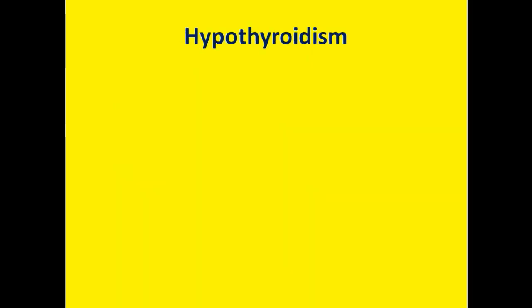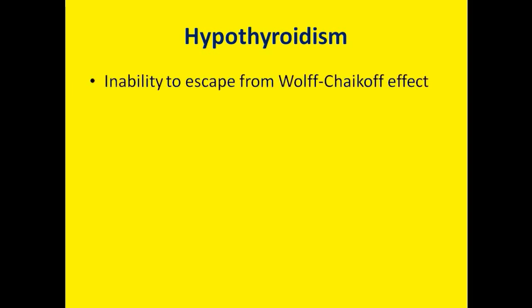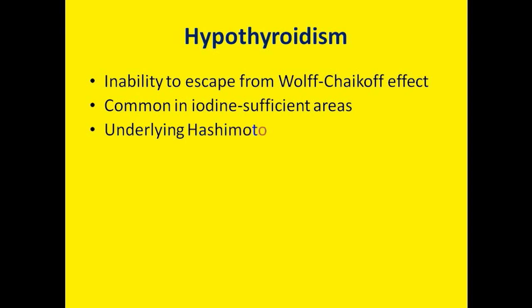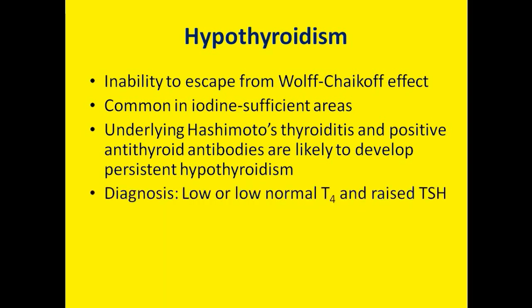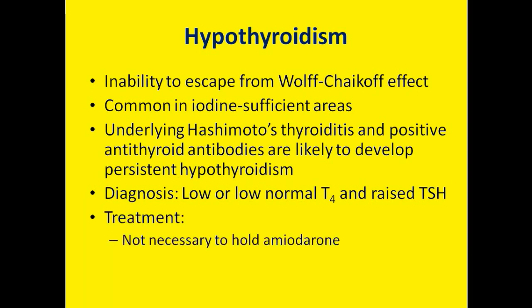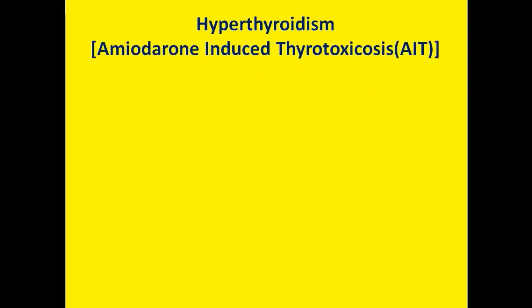Amiodarone-induced hypothyroidism is due to the inability of thyroid cells to escape from the Wolf-Chaikoff effect. It is common in iodine-sufficient areas and more common in patients with underlying Hashimoto's thyroiditis and positive antithyroid antibodies. It is diagnosed based on low or low-normal T4 with raised TSH. During treatment, it is not necessary to stop amiodarone; it should be treated by supplementing thyroxine hormone.